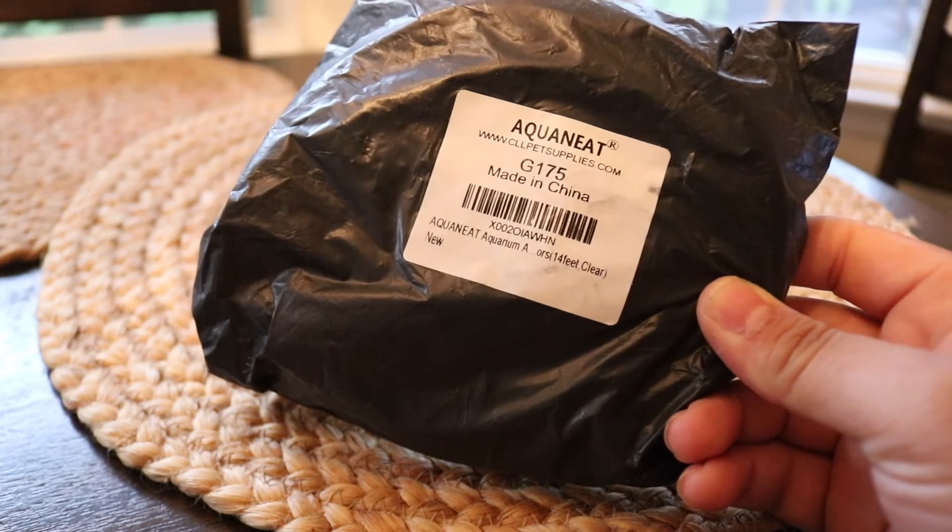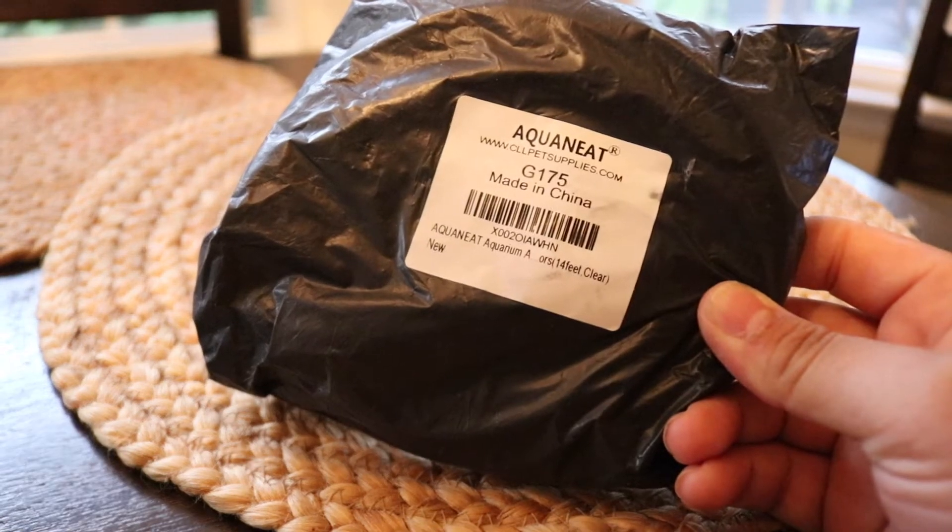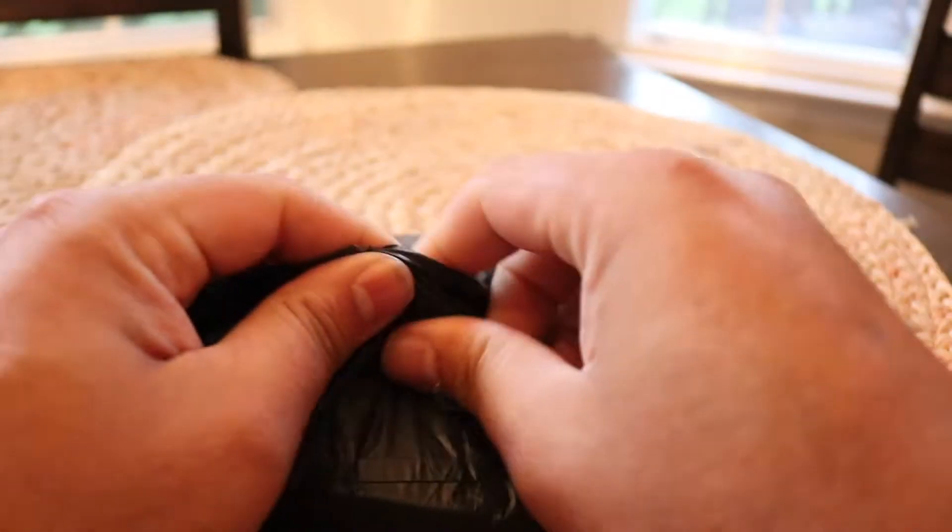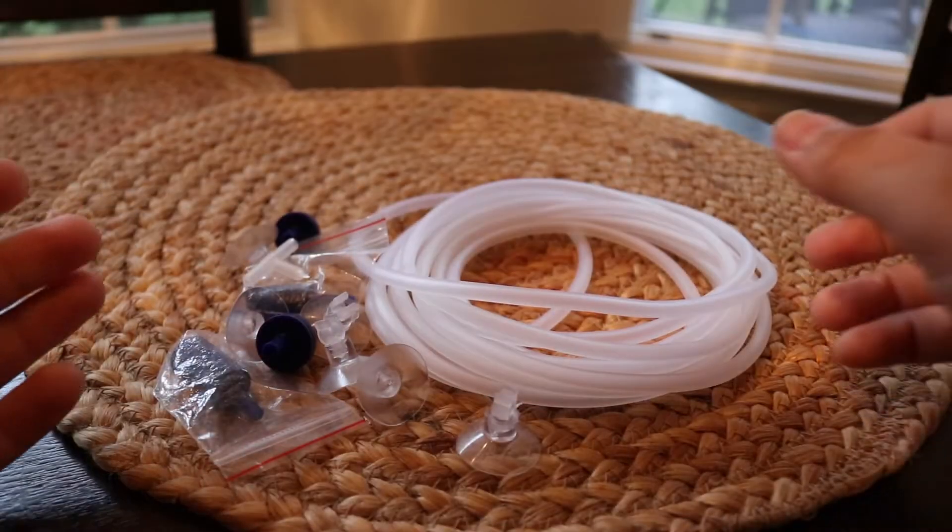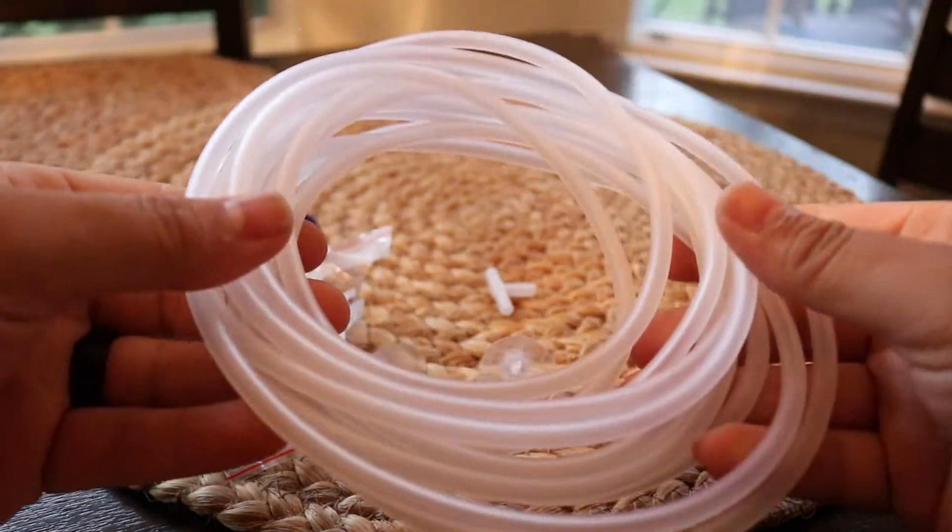I want to show you this kit right here. There are several components that come in here. This is from Aquanet and it's going to have a couple different things, so we're going to do an unboxing so you can actually see what's inside. Here's what we got. If you're trying to put air in your tank, you're going to need some of this. So first of all...